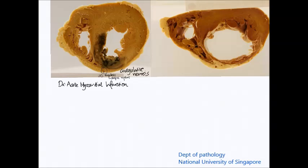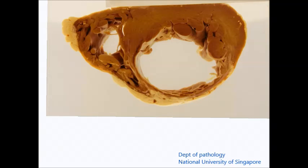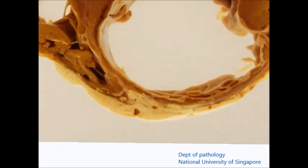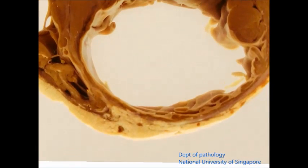There is a second picture, again showing the transverse section of the heart with a very similar view of the left as well as the right ventricles. Taking a closer look, we can see striking thinning of the wall of the left ventricle anteriorly as well as partly in the interventricular septum. Within the interventricular septum, there are some pale whitish streaky areas, and these can also be seen as almost greyish-white areas right at the area of thinning.